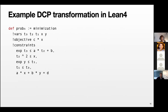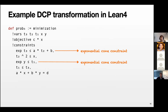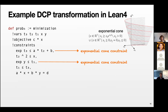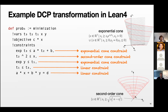After those steps, we basically have a conic form. The inequalities are replaced by constraints stating that linear expressions are elements of cones: two constraints become a linear expression in the exponential cone, one constraint becomes a linear expression in the second-order cone, and the remaining two are linear constraints. The full conic form is somewhat long to write out explicitly.